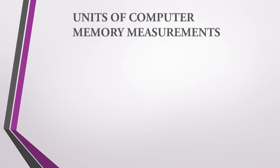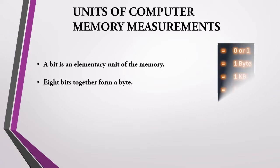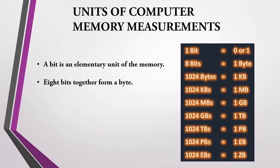Let us learn units of computer memory measurements. A bit is an elementary unit of memory — a binary digit that is either 0 or 1. A number of bits together are used to store data. 8 bits together form 1 byte. 1024 kilobytes form 1 megabyte. 1024 megabytes form 1 gigabyte. 1024 gigabytes form 1 terabyte. 1024 terabytes form 1 petabyte. 1024 petabytes form 1 exabyte. And 1024 exabytes form 1 zettabyte.